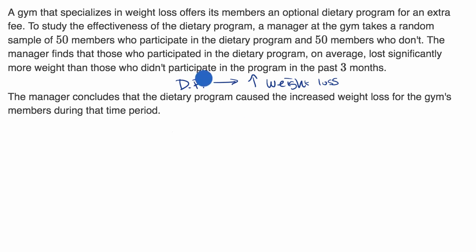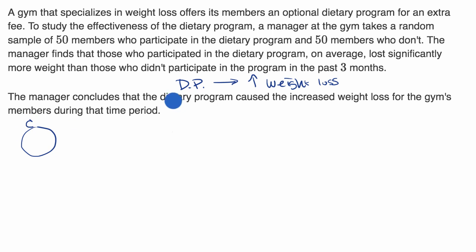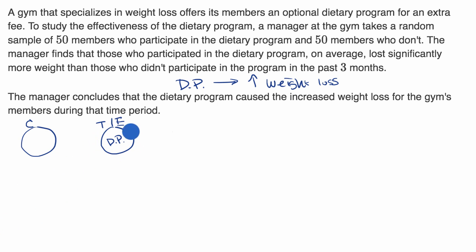The manager would be able to make this conclusion if it were a well-designed experimental study. In an experimental study, you have a control group that wouldn't have the dietary program and a treatment group that does. If those folks are actually seeing more weight loss and it's statistically significant, then you might be able to conclude the causal relationship that the dietary program is causing the weight loss.